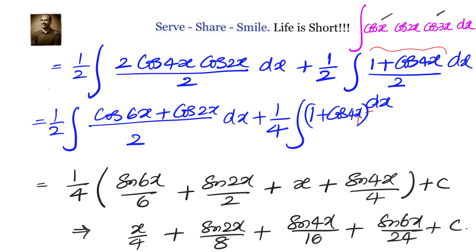Therefore, the integral of cos x · cos 2x · cos 3x dx equals x/4 + sin 2x/8 + sin 4x/16 + sin 6x/24 + C.